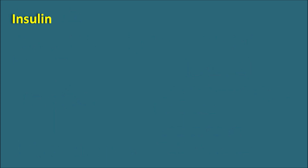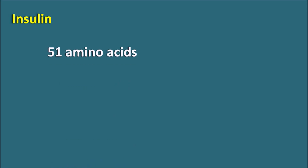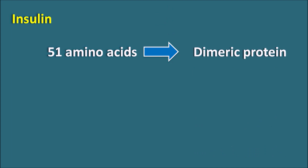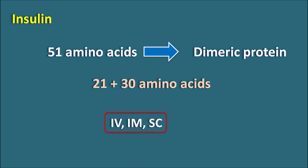The next one is insulin. Insulin is a well-known endocrine hormone made up of 51 amino acids — it is a dimeric protein, not a single peptide. It is made up of chain A and chain B with 21 and 30 amino acids respectively, for a total of 51 amino acids. Insulin is not suitable by oral route and is given by intravenous, intramuscular, or subcutaneous routes. Nowadays, we have modified insulin preparations like insulin lispro, insulin aspart, and insulin detemir with different durations of action.